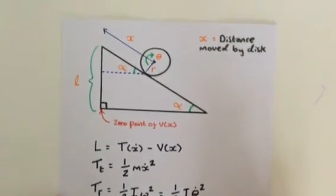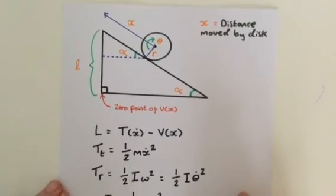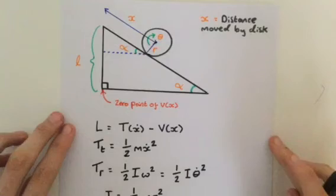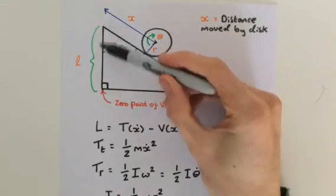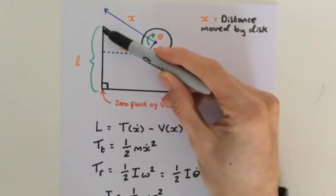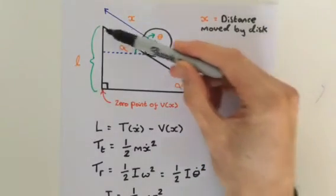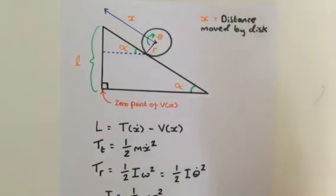If we use our sine, we know that sine is equal to opposite divided by our hypotenuse. Our opposite is this—this is what we want to find out. And our hypotenuse is simply x, the distance that it has rolled.